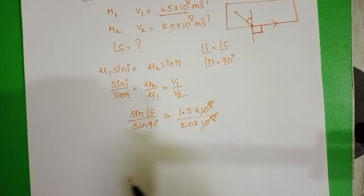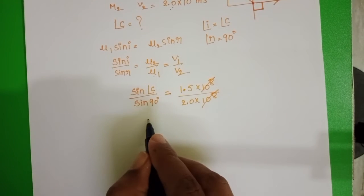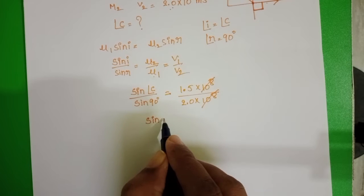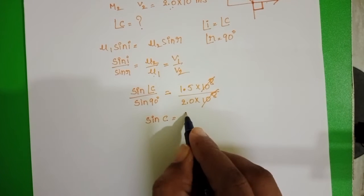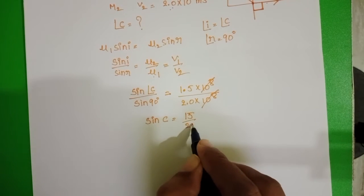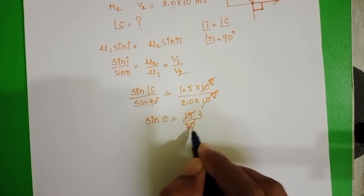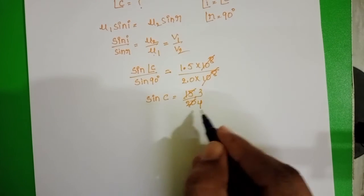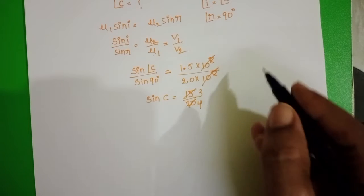10 power 8 gets cancelled. Sin 90 value is 1. Sin c equals 15 by 20. 5 threes, 5 fours. Sin c equals 3 by 4.